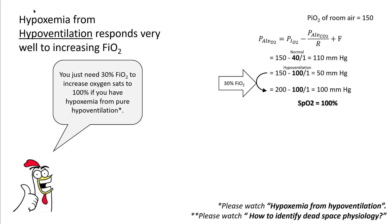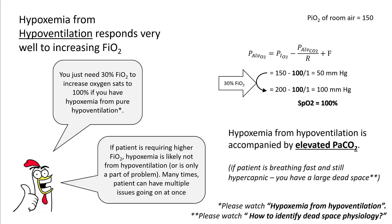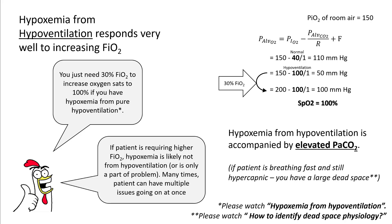Please review hypoxia from hypoventilation for a more detailed understanding. Hypoxemia from hypoventilation is always accompanied by elevated carbon dioxide levels in the arterial blood — these patients are breathing slow and shallow. However, if your patient is breathing fast and is still hypercapnic, think about dead space physiology. If your patient is requiring higher FiO2, hypoxemia is likely not from hypoventilation alone. For example, if a patient who was given morphine is requiring 100% FiO2 to maintain sats around 90%, this is not all from hypoventilation — there is something else going on.